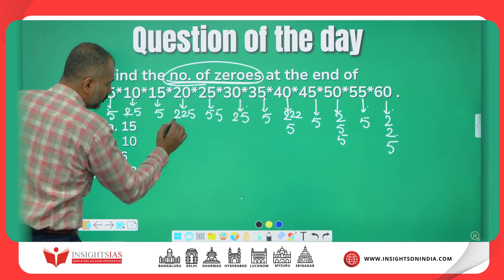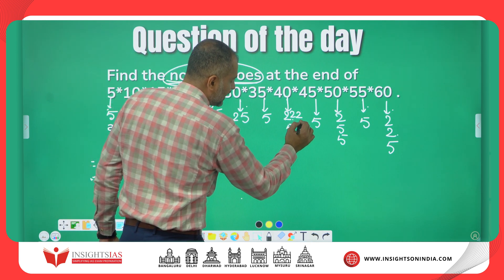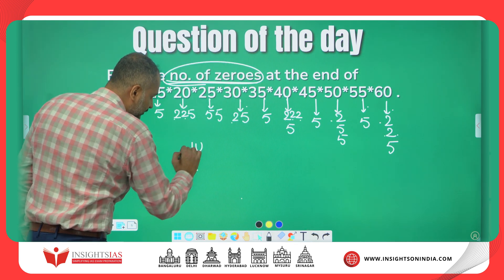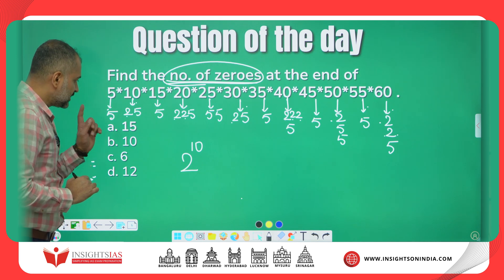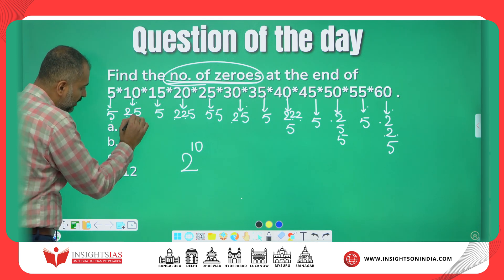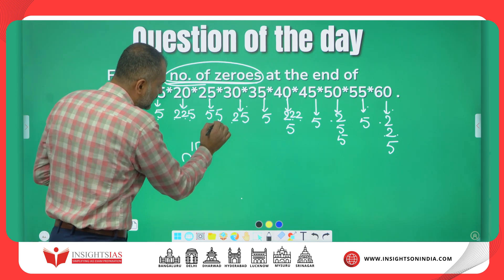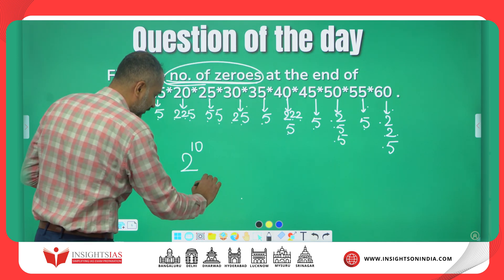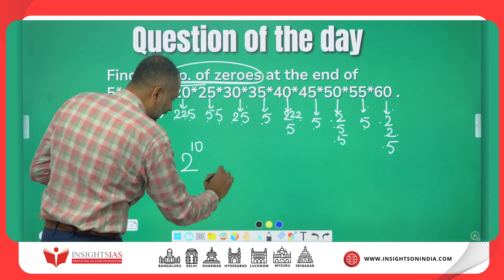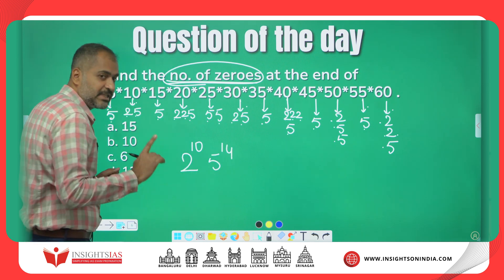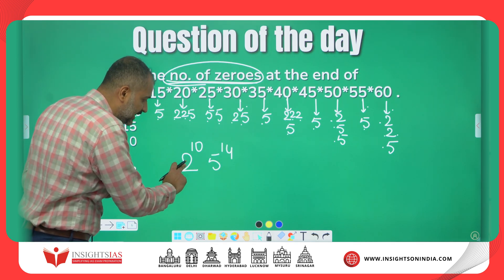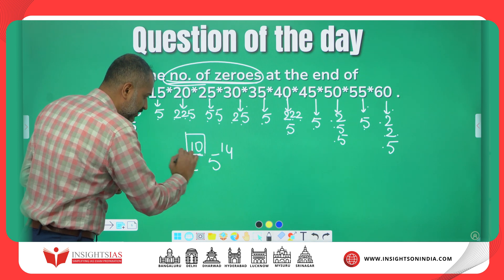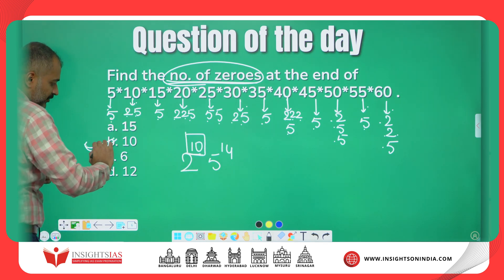Now I'll count how many 2s I have written: 1, 2, 3, 4, 5, 6, 7, 8, 9, 10. Ten 2s are there, so 2¹⁰. Similarly, 5s: 1, 2, 3, 4, 5, 6, 7, 8, 9, 10, 11, 12, 13, 14. We have 14 fives. Whichever the power is less among these 2 and 5, that many zeros you'll get. So this expression has to end with 10 zeros.